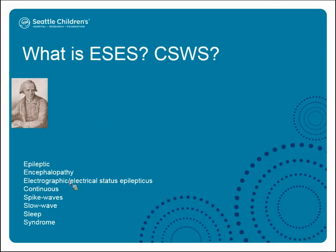Now I want to talk about ESES and CSWS. All the words used in these acronyms are listed in the bottom left corner — nobody can really agree on what the letters mean. This is an epileptic encephalopathy that includes electrographic or electrical status epilepticus, seemingly continuous or not, with spike waves or not, during slow-wave sleep and/or other epochs of sleep. It does seem to happen in sleep and does seem to be some kind of syndrome.